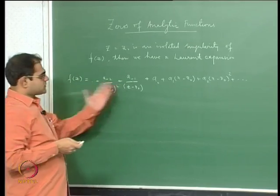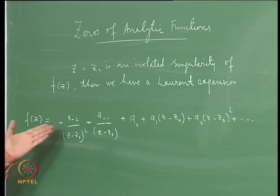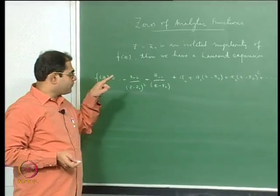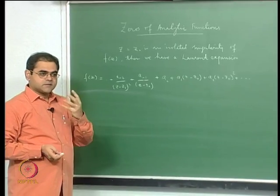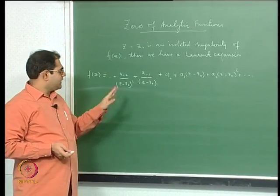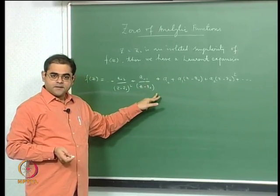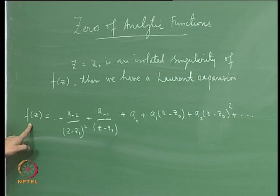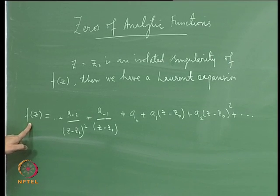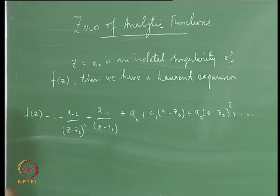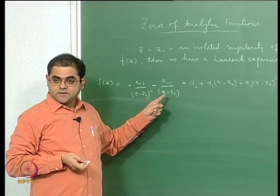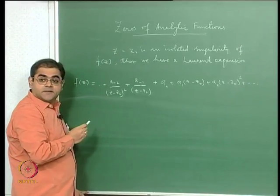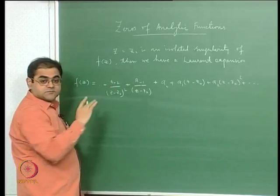This is called a Laurent series centered at z0. The function converges to this series for values of z in a small disc surrounding z0, excluding z0 itself since you cannot substitute z0 — you would be dividing by zero in the negative terms. If z=z0 is a removable singularity, all the negative coefficients will be zero, so the Laurent expansion is actually a Taylor expansion — that is exactly what happens for sin(z)/z at z=0.